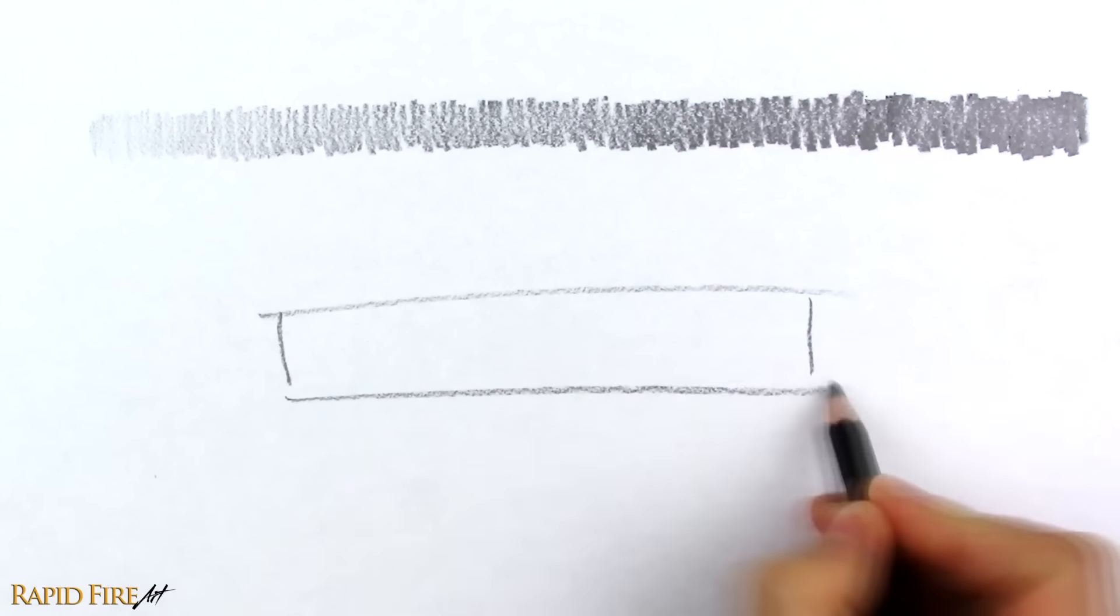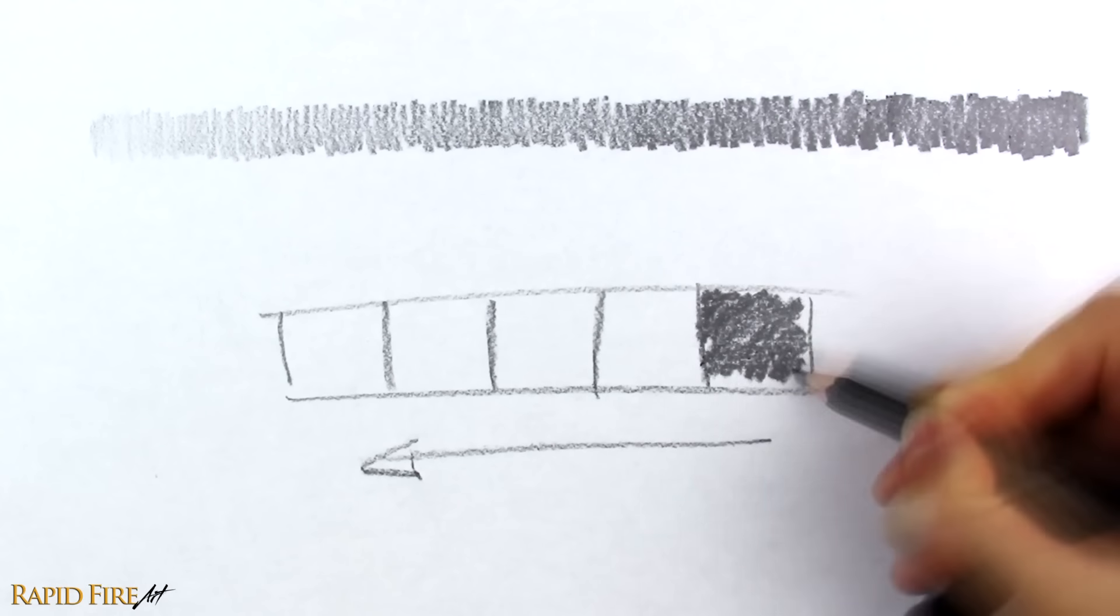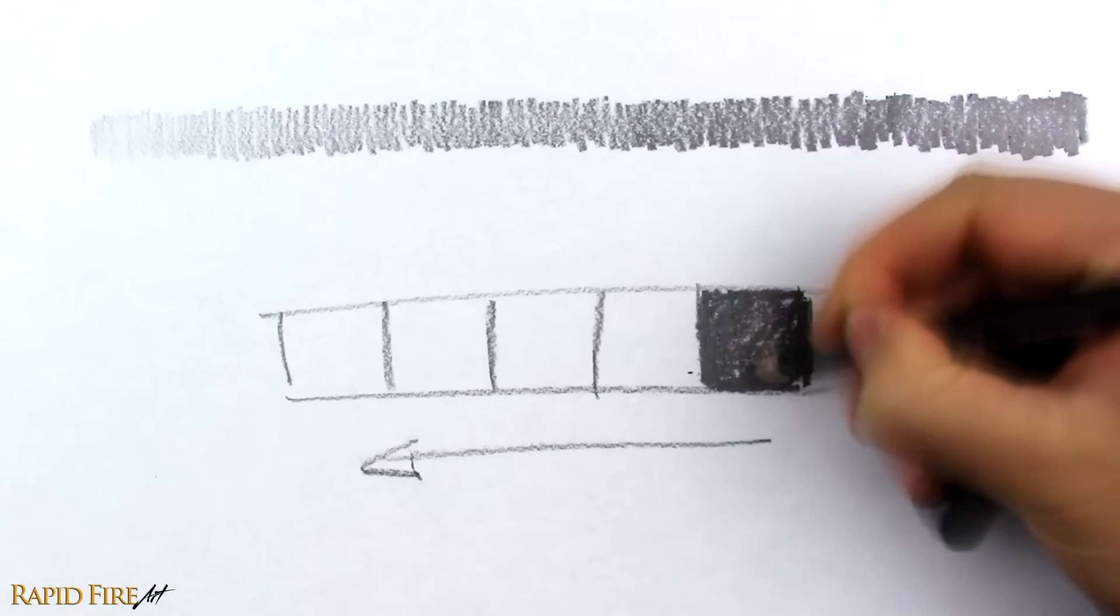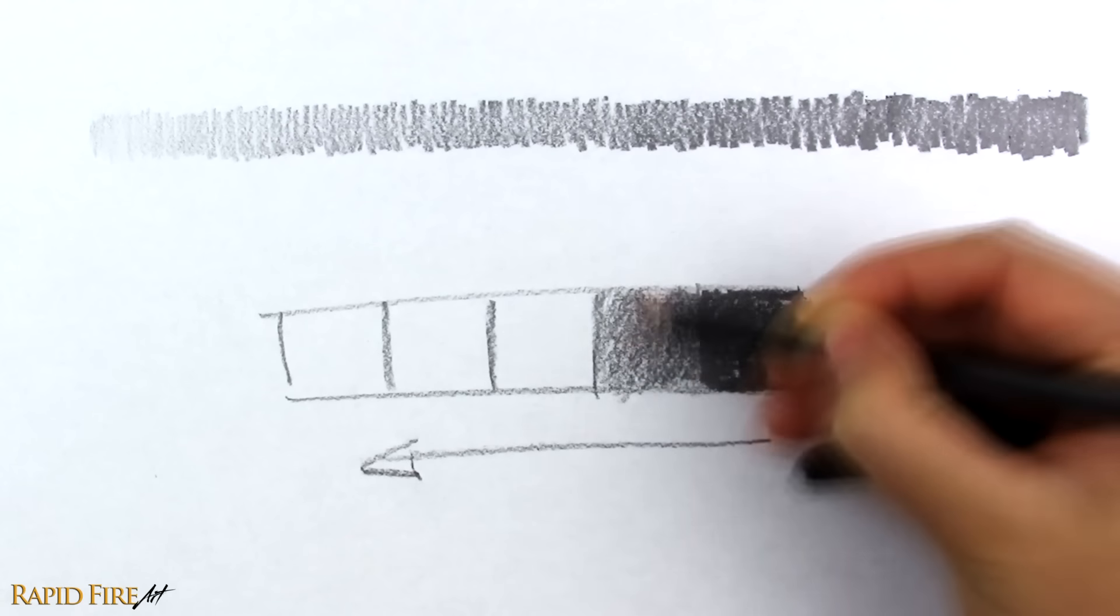Another way to practice is to draw a long rectangle and divide it into several squares. Fill the squares from right to left. Start with the darkest value you can possibly make and work your way towards the lightest.